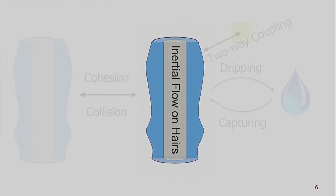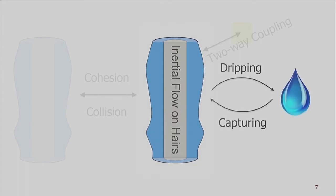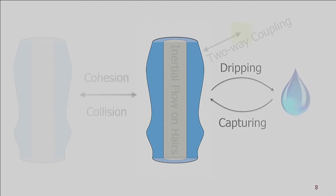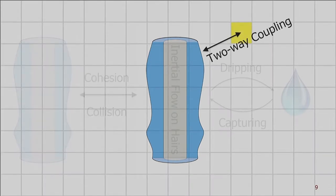First, we introduce an inertial flow model where the liquid on hair is modeled as a height field. Then we propose a liquid-capturing scheme and a dripping model to convert between the reduced liquid and liquid particles. To simulate the cohesion effect, we also propose a physically-inspired model. Finally, we discuss two-way coupling between the reduced liquid on hairs and the liquid on a uniform grid.